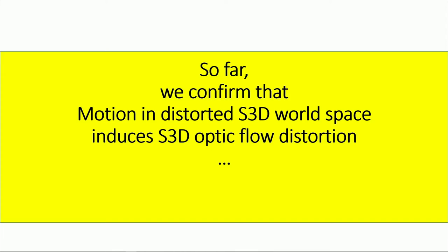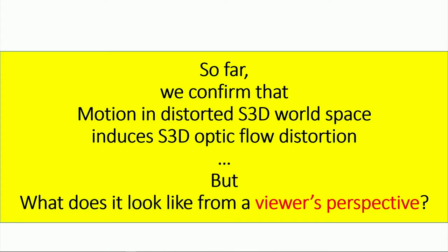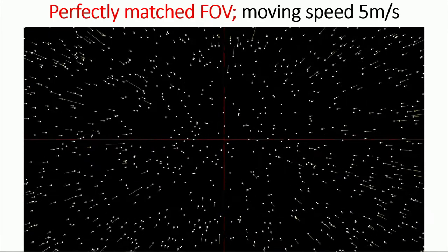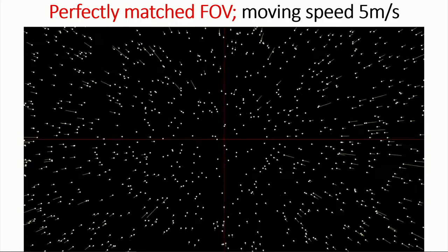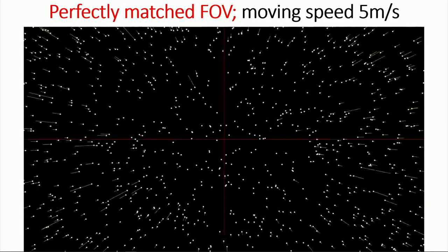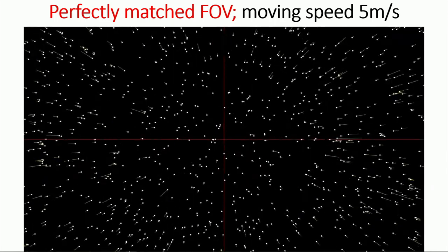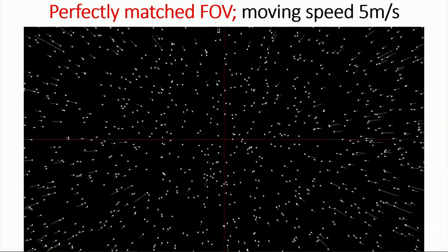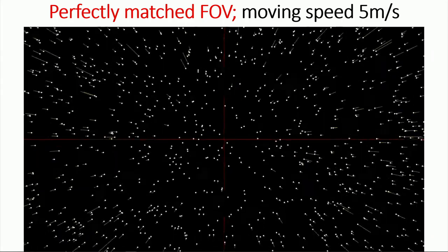So far, we confirmed that motion in distorted world induces 3D optic flow distortion. But what does it look like from the viewer's perspective? Here I'm presenting the optic flow of a cloud of dots when they are perfectly reproduced without distortion, assuming that the viewer is moving at 5 meters per second.